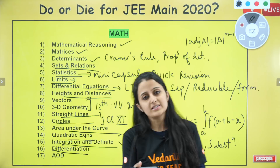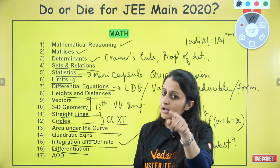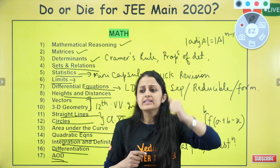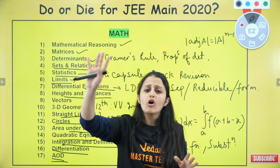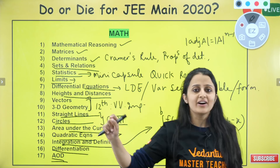Some people fear differentiation, but it can be handled. AOD is the highest priority — make sure you cover increasing and decreasing functions. Take a note of all these do or die topics. In math, questions are repeated from past years, so past year practice is essential.